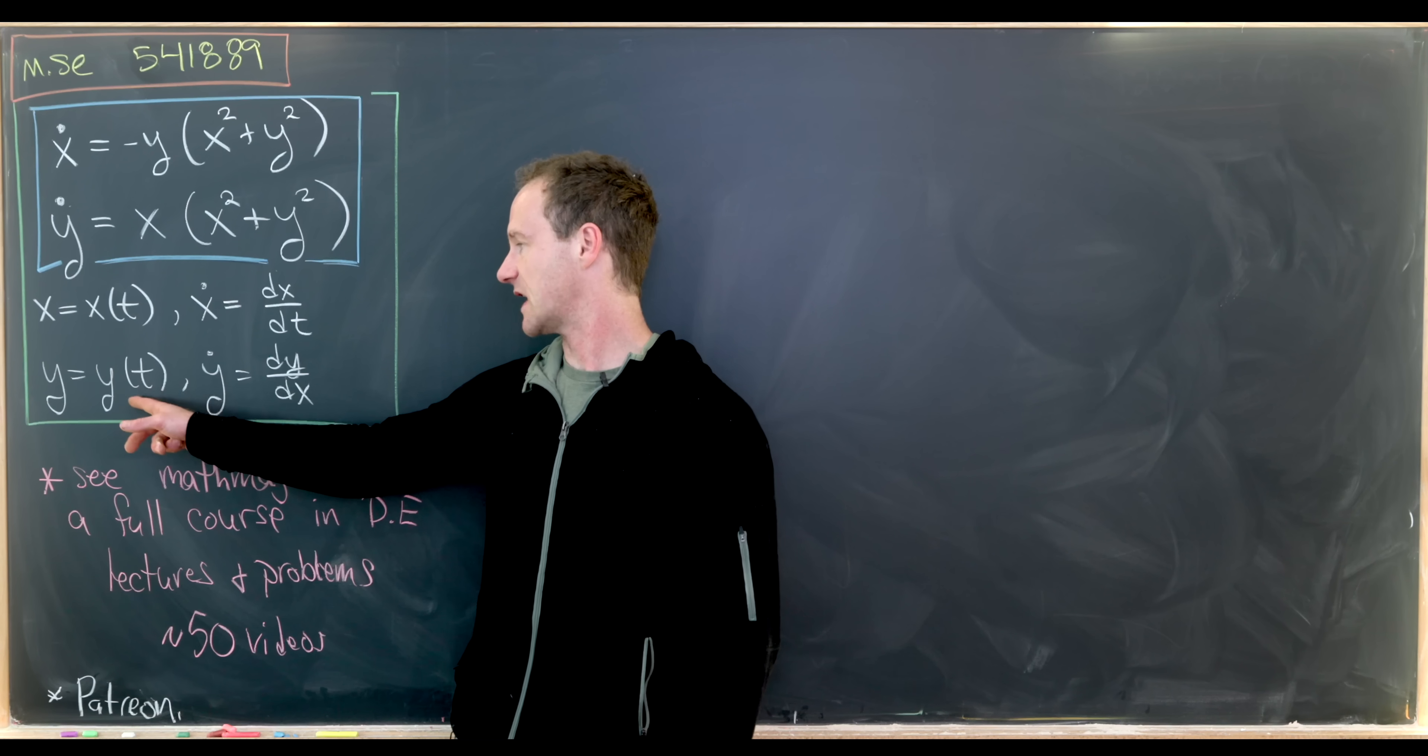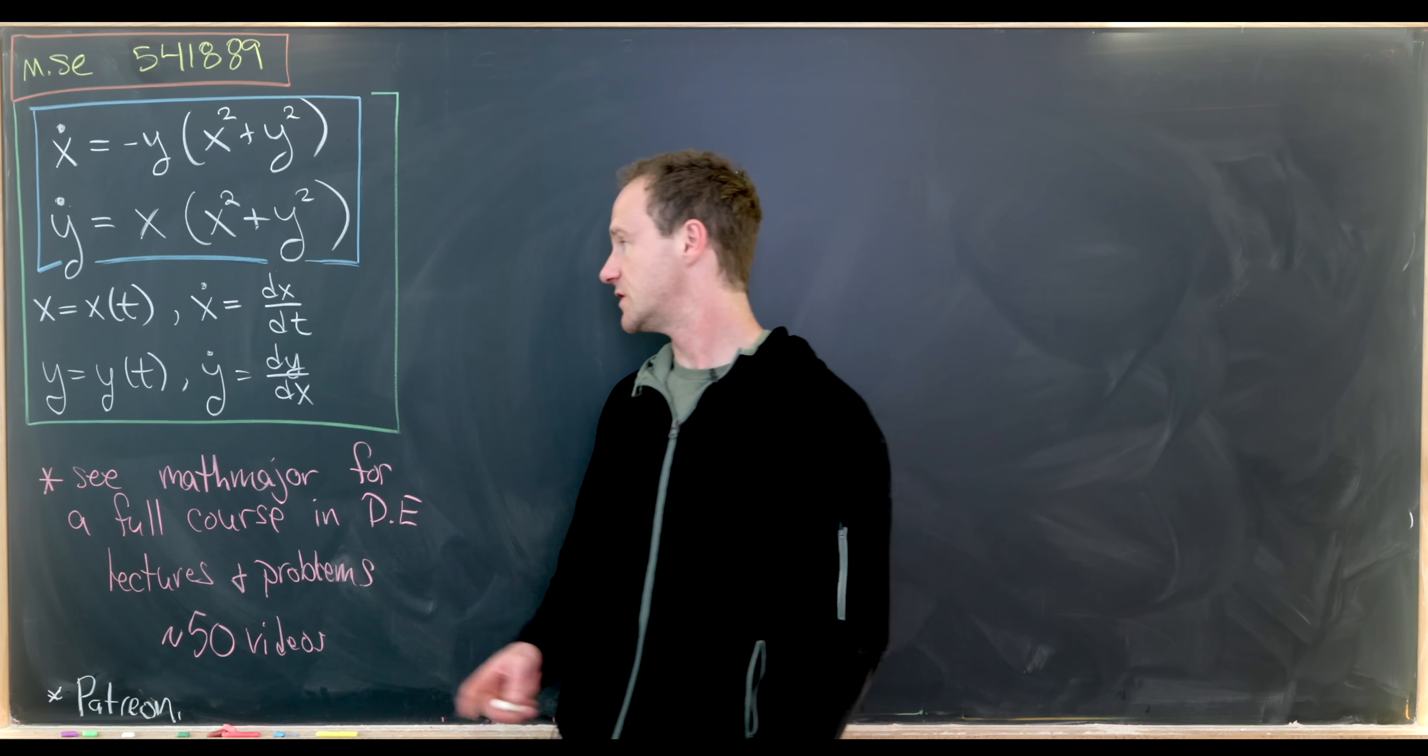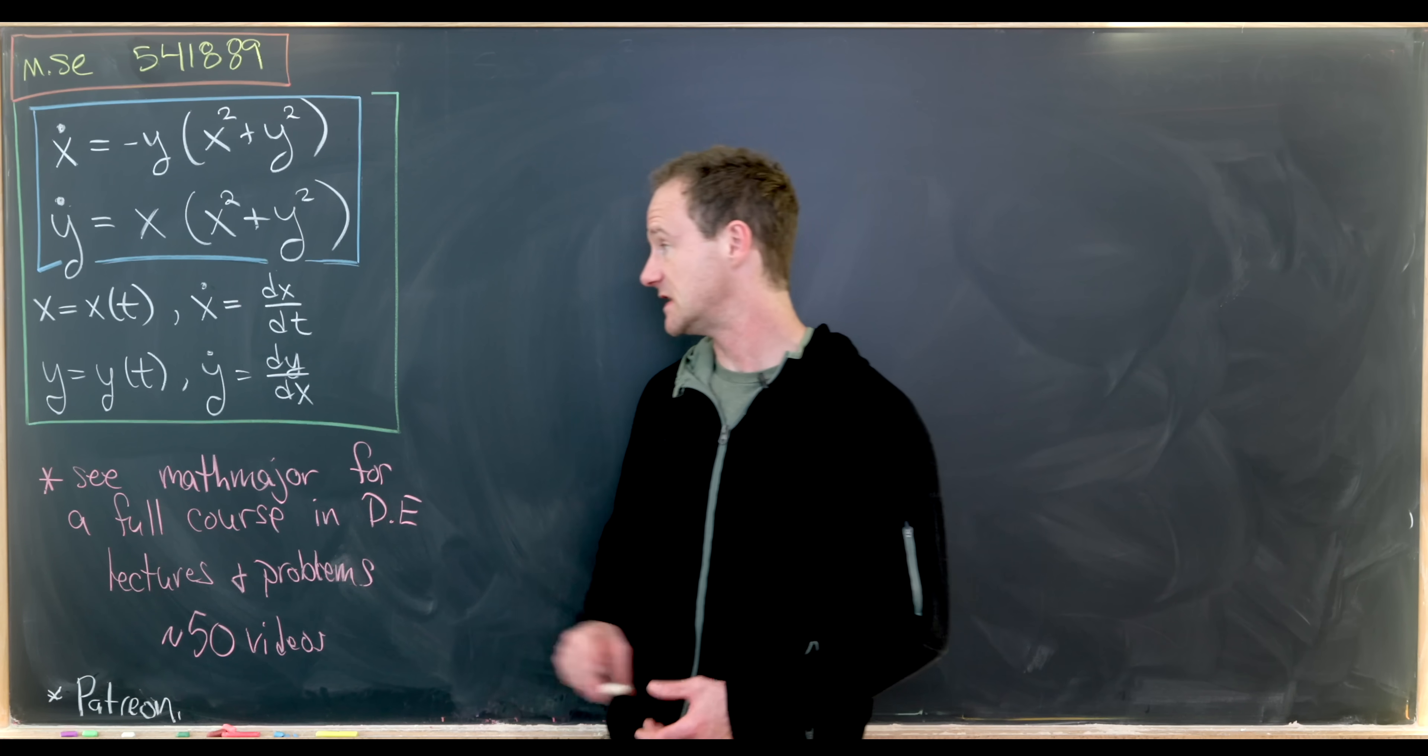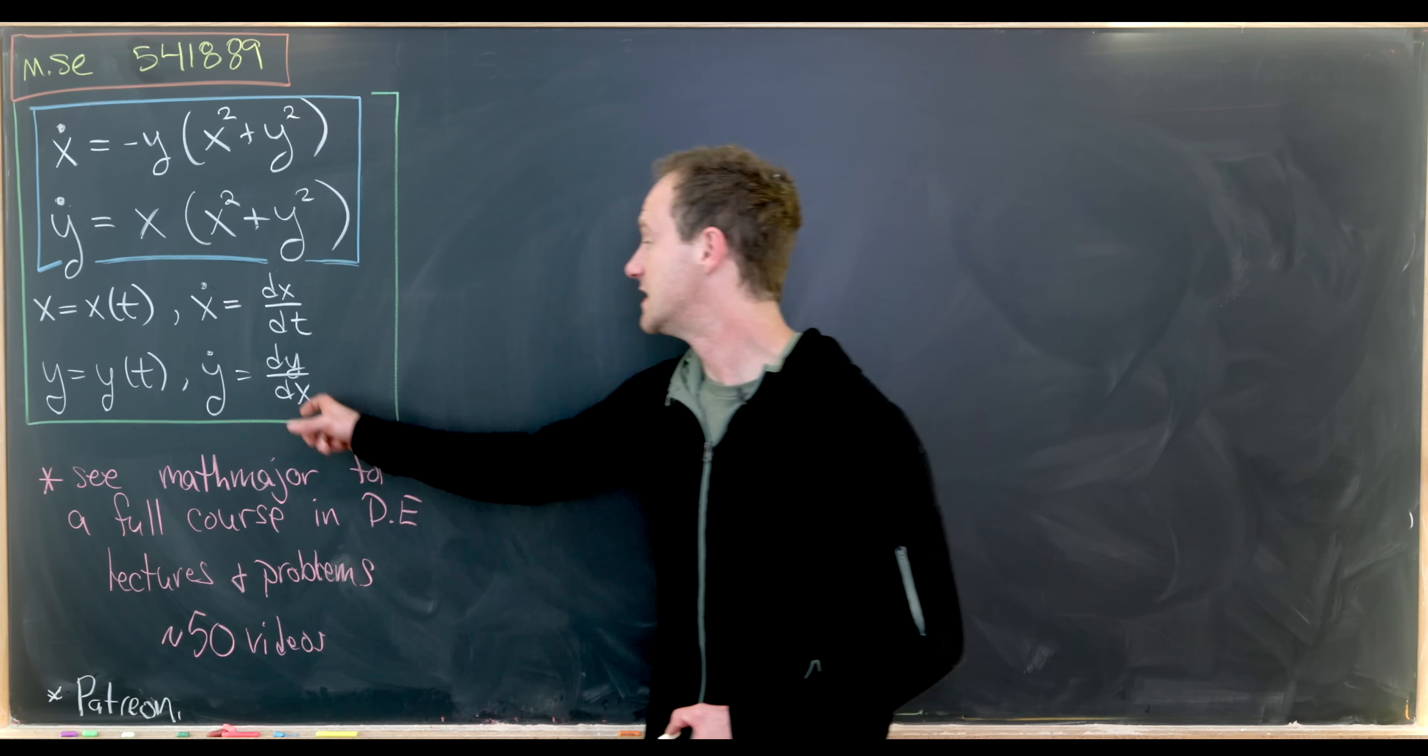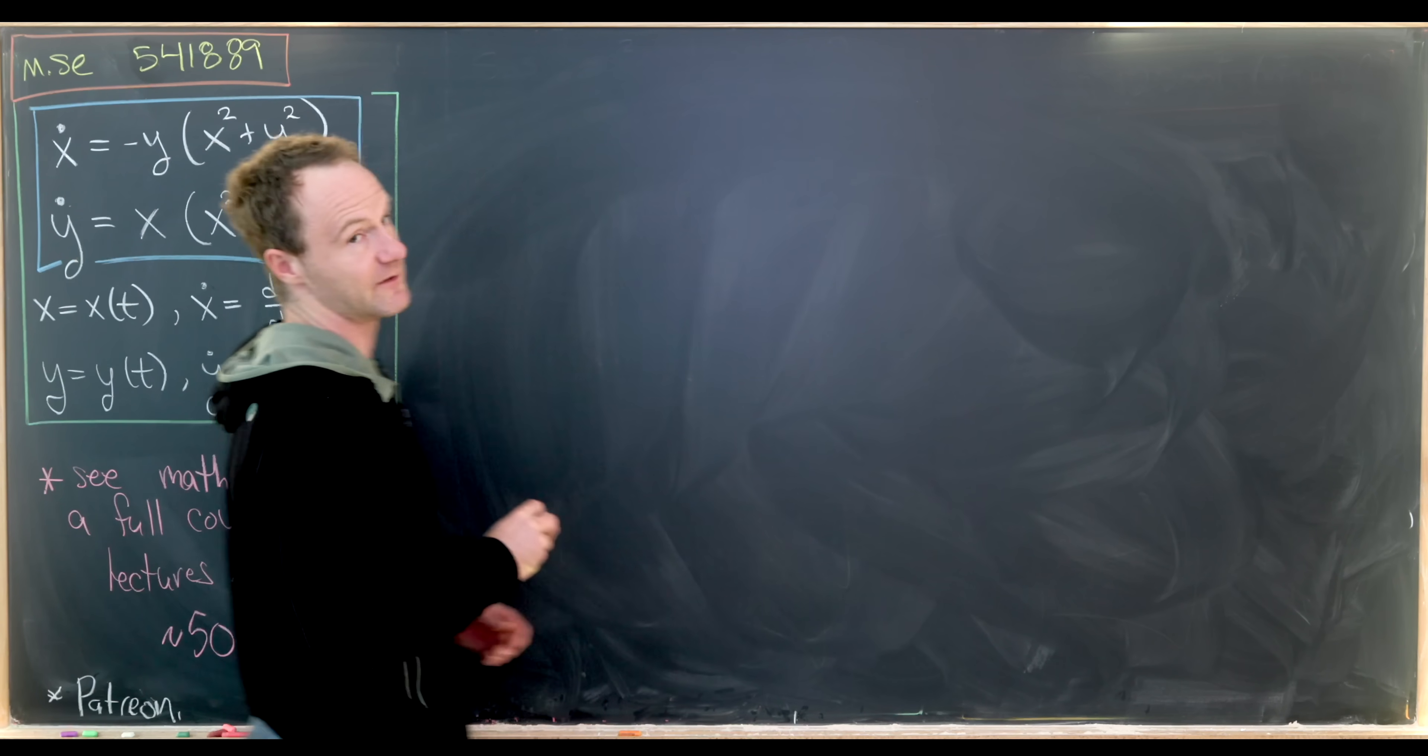So we're going to assume that x and y are both functions of t. And we'll use the notation x dot is equal to the derivative of x with respect to t, and y dot is likewise the derivative of y with respect to t.